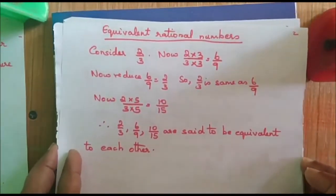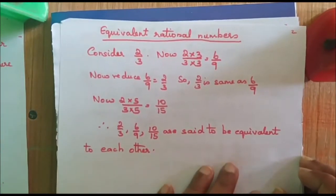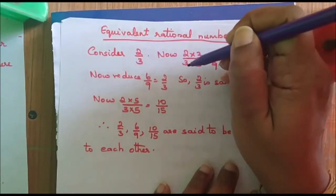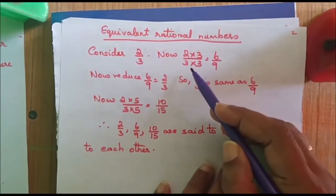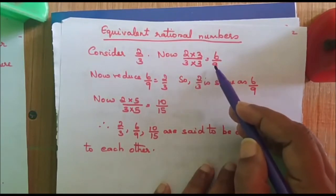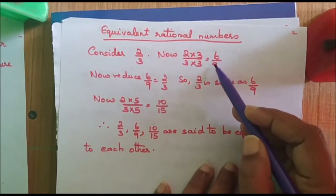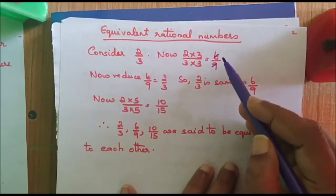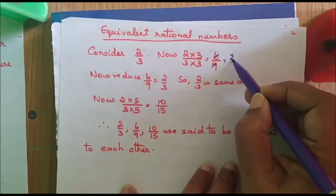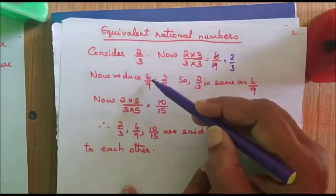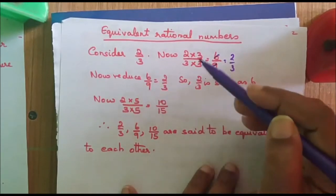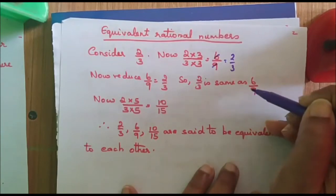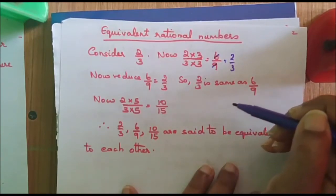We will go to the next topic, that is equivalent rational numbers. Let us consider a number 2 by 3. 2 by 3 can be written as 2 into 3 and 3 into 3 which equals 6 by 9. When I reduce 6 by 9, I am dividing this by 3, I get 2 by 3. Therefore, 2 by 3 and 6 by 9 are the same. Hence, they are called as equivalent rational numbers.